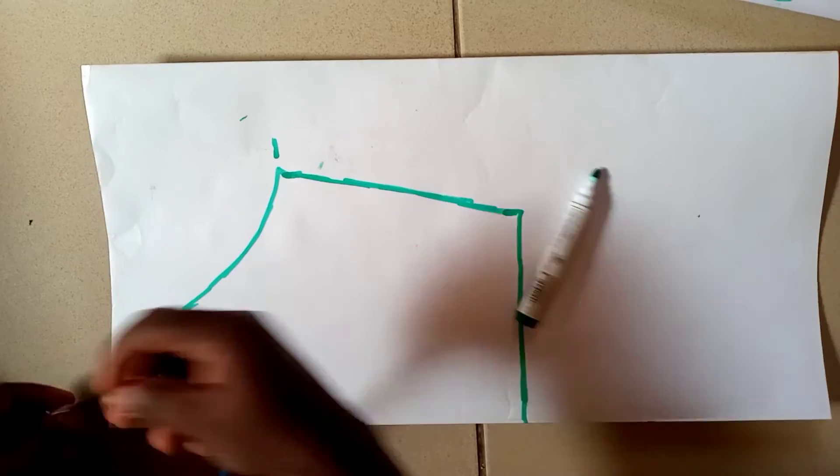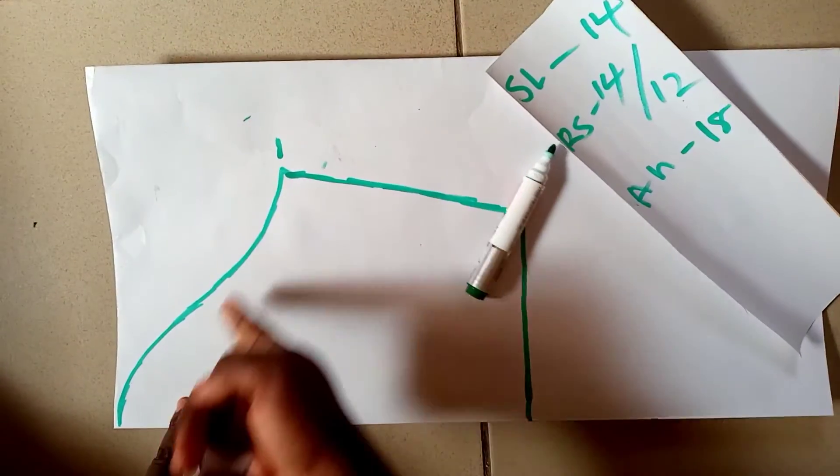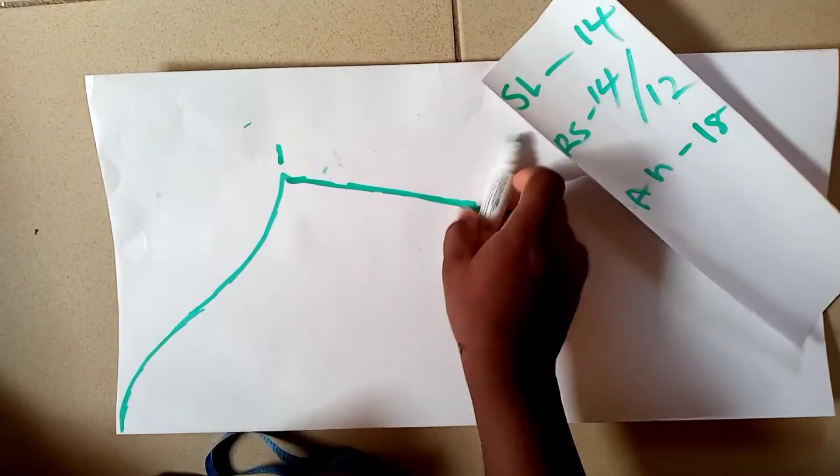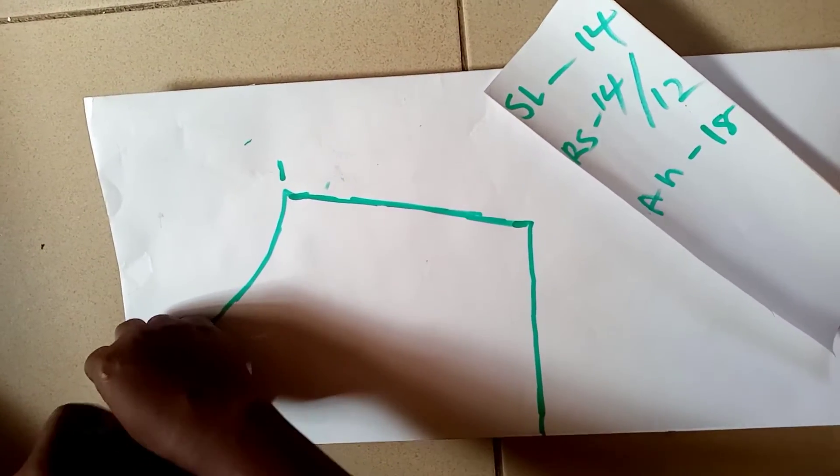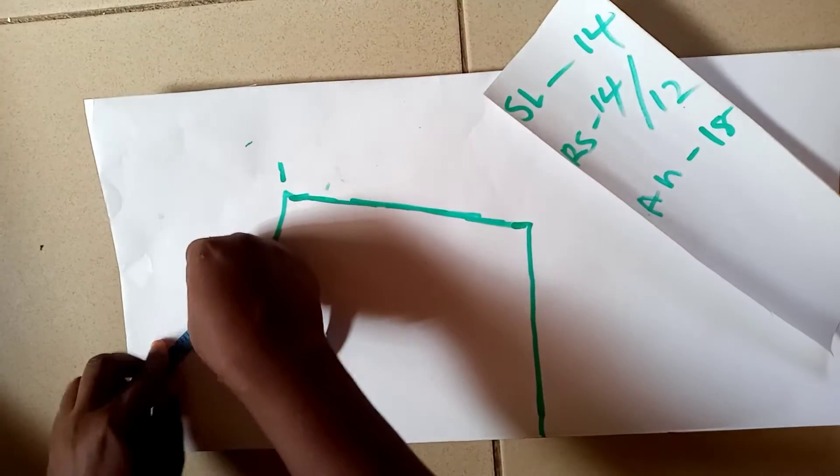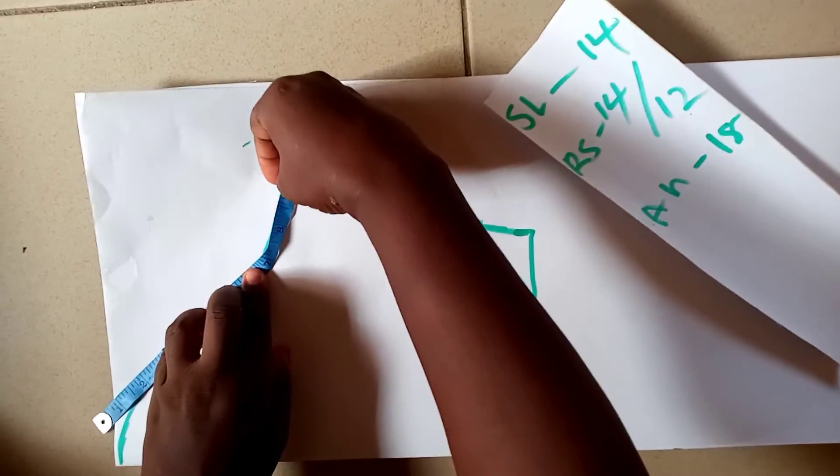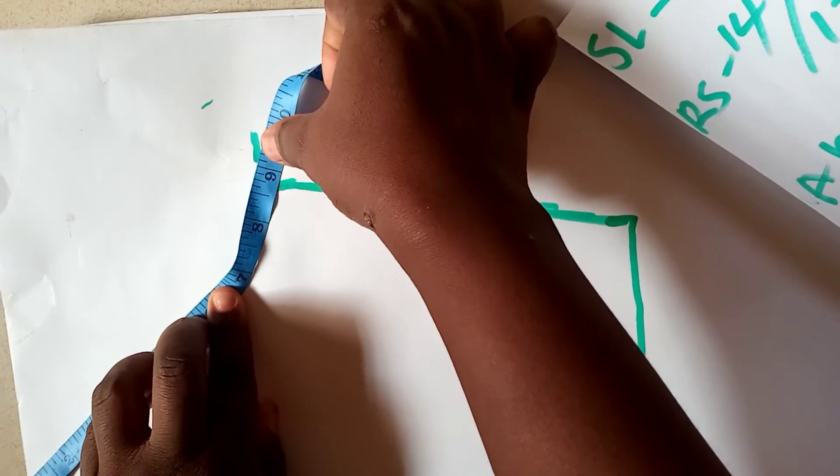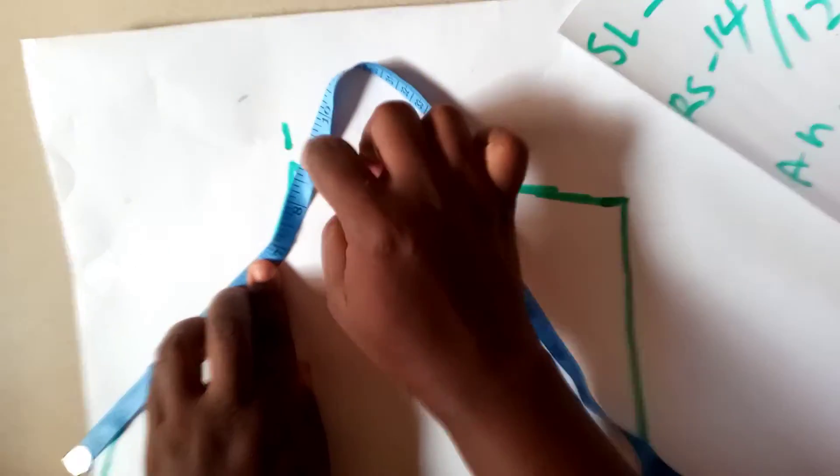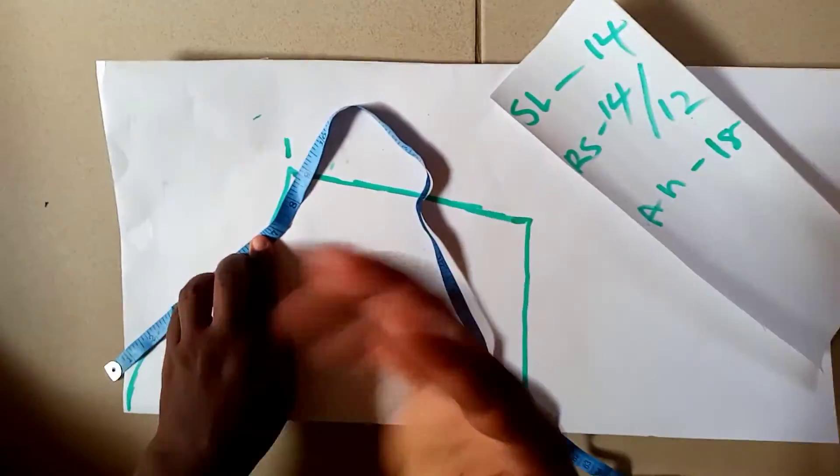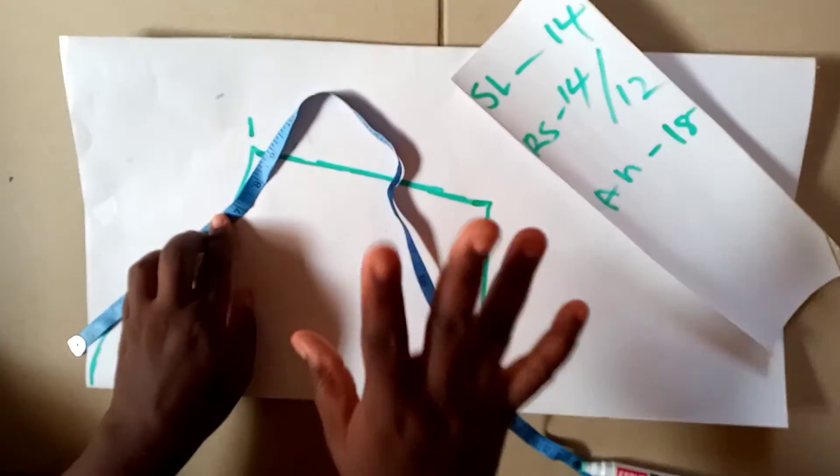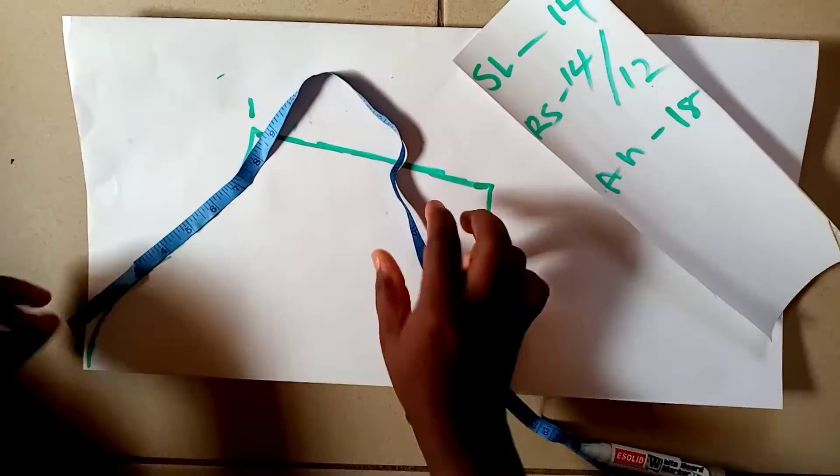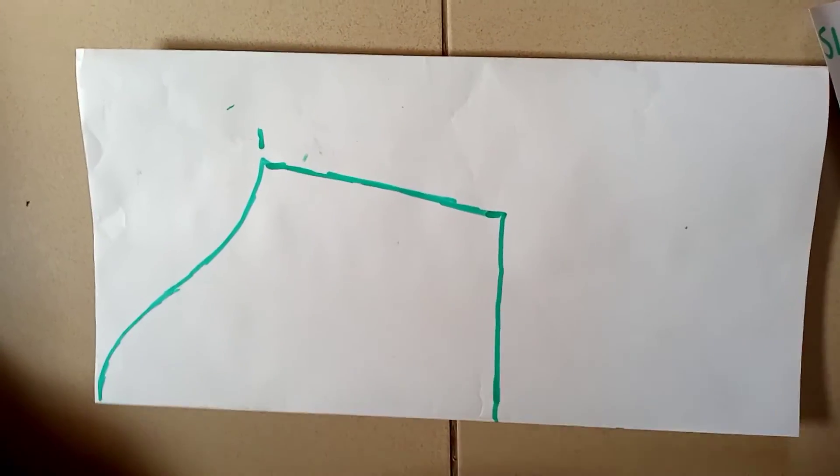...is to take your measurements. Like my armhole is 18 inches, so I'm supposed to have 9 inches because this is on fold. So let's see if it corresponds. Guys, you can see it's corresponding - the 9, it's corresponding, the 9 inches. That is to show that it's going to fit properly into the armhole of my dress.